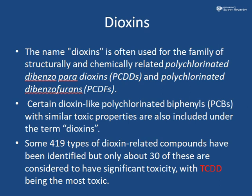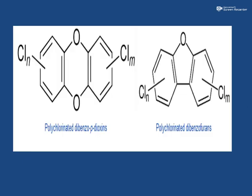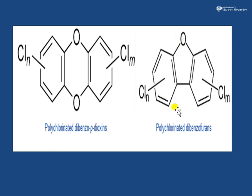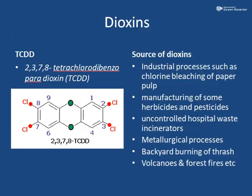Let's explore the structure of dioxin. This is polychlorinated dibenzodioxin — it has two oxygen molecules within the molecule. You can also have polychlorinated dibenzofurans, in which there is only one oxygen. So a dioxin is a moiety which can have two oxygen molecules within it, and of course chlorination can happen to it.